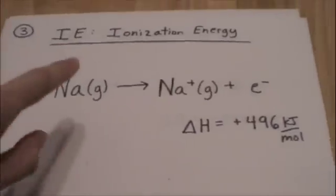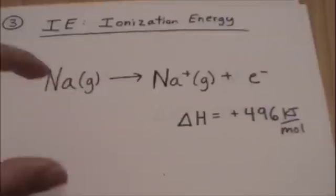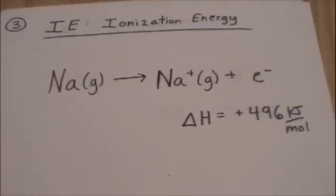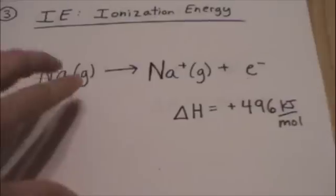And those electrons that you're removing are the one in that outermost shell, the one that's going to be the easiest to pull off. So the ionization energy, this is the first ionization energy, energy required to remove the outermost electron from an atom in its gaseous state.